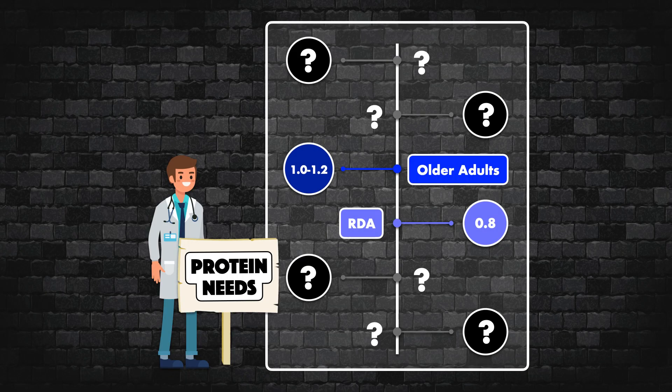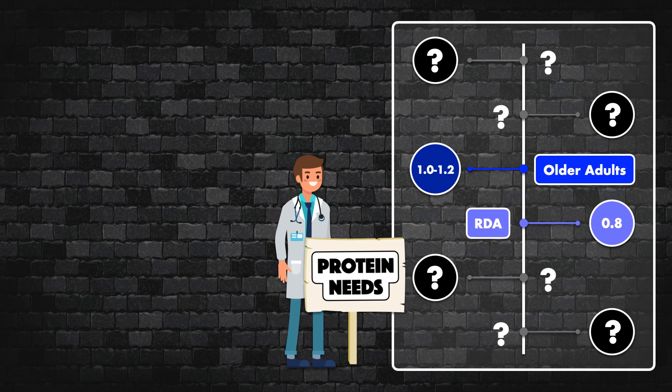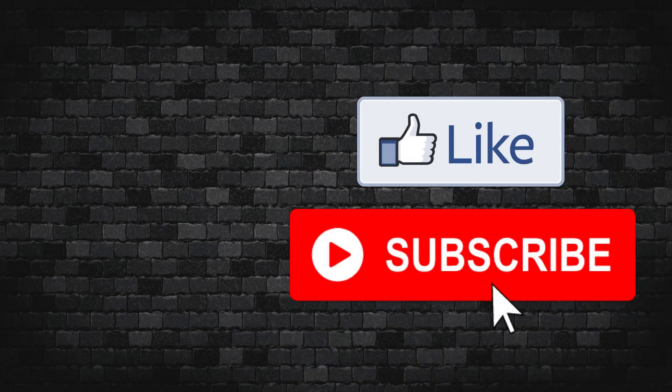Once again, we have the RDA at 0.8 grams per kilogram per day, and just above it, we have older adults at 1.0 to 1.2. In the next video, we'll start filling in these question marks by exploring cirrhosis and chronic kidney disease. Make sure you hit the like button and subscribe to the channel.